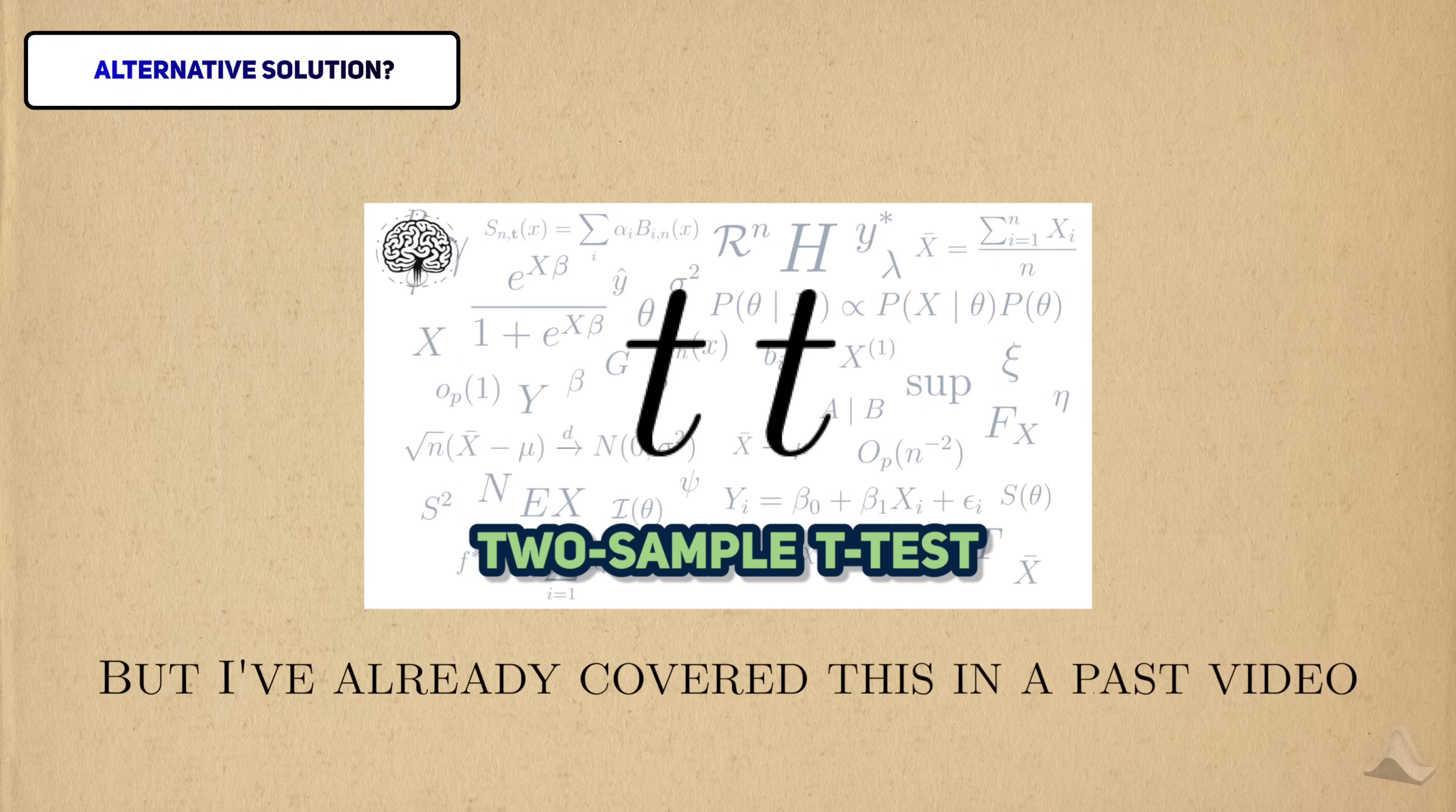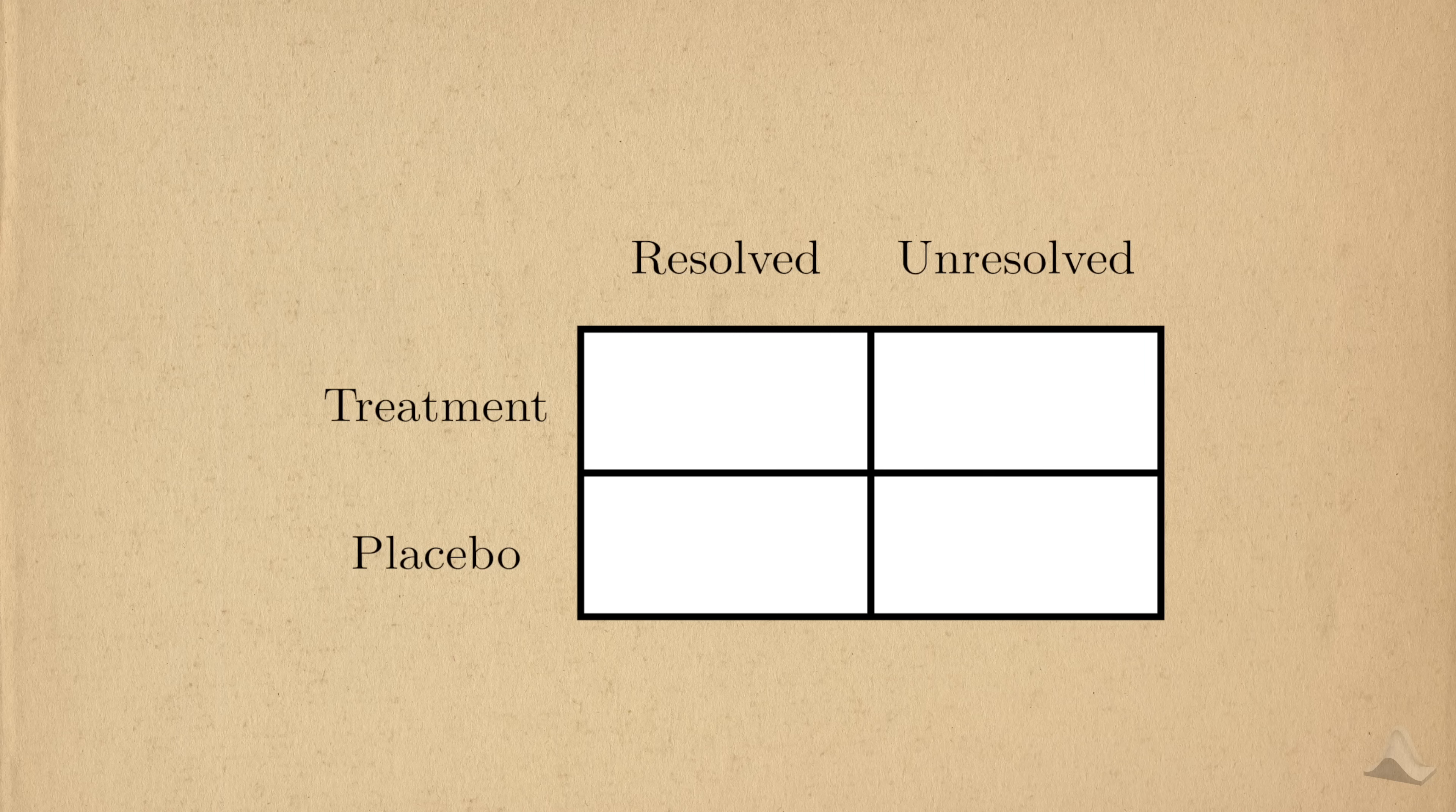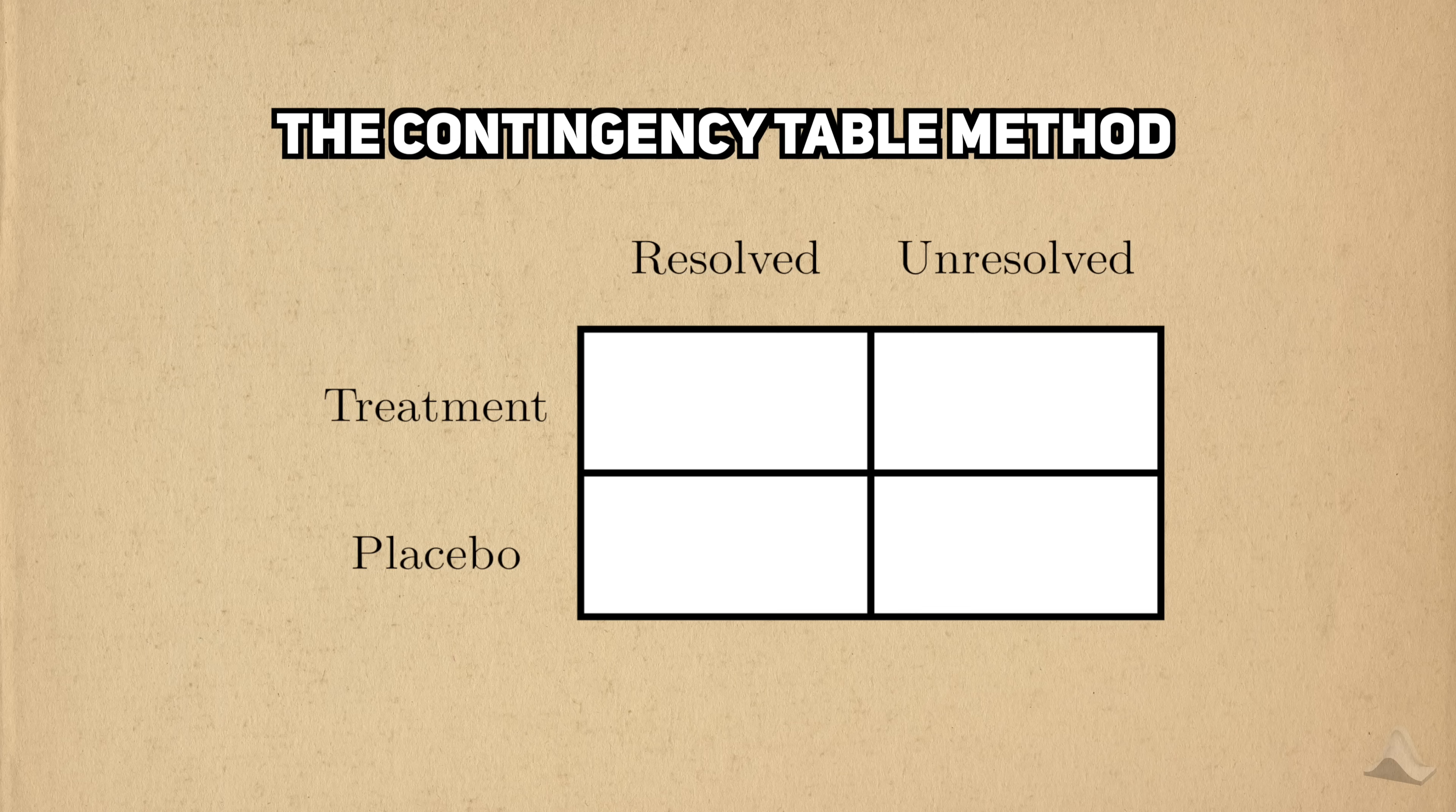But in a past video, we saw an application of the central limit theorem to the two-sample t-test. To teach you something new, we're going to go with an alternative, but equivalent approach to the two-sample proportion test. We're going to use a contingency table and the chi-squared test to analyze our migraine data.